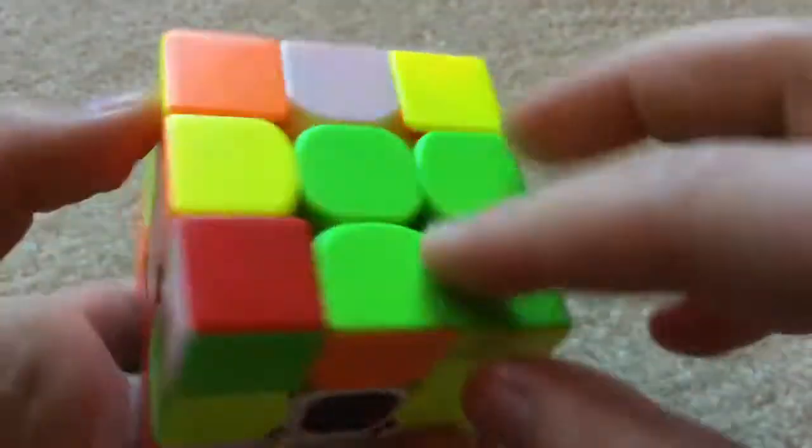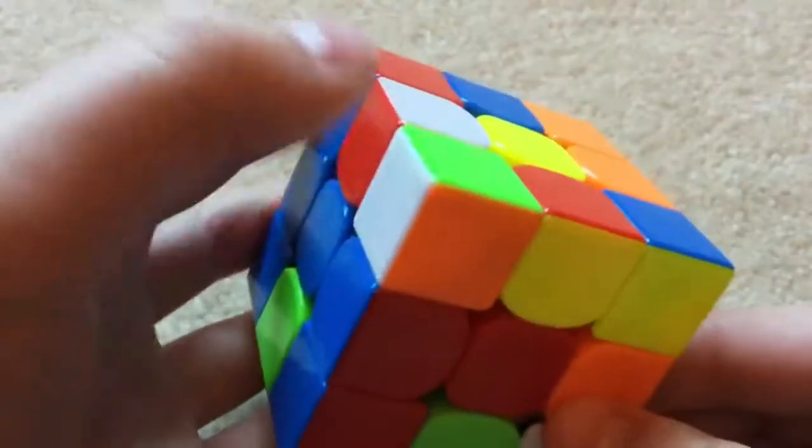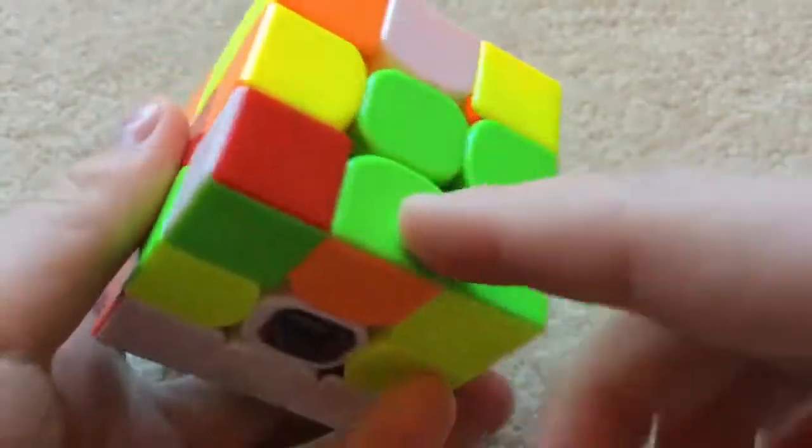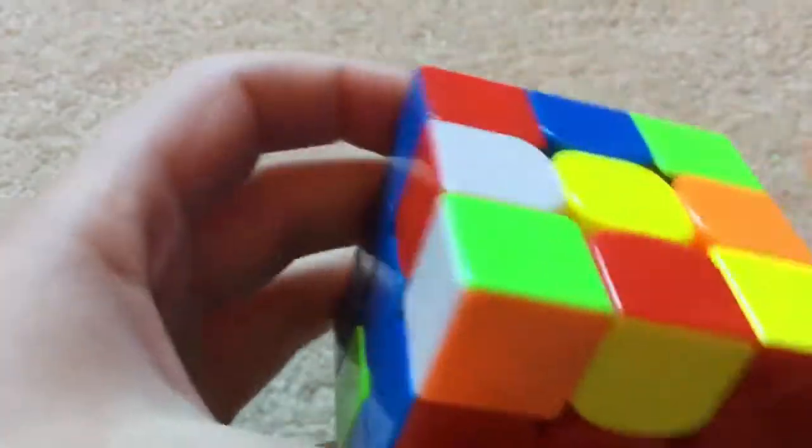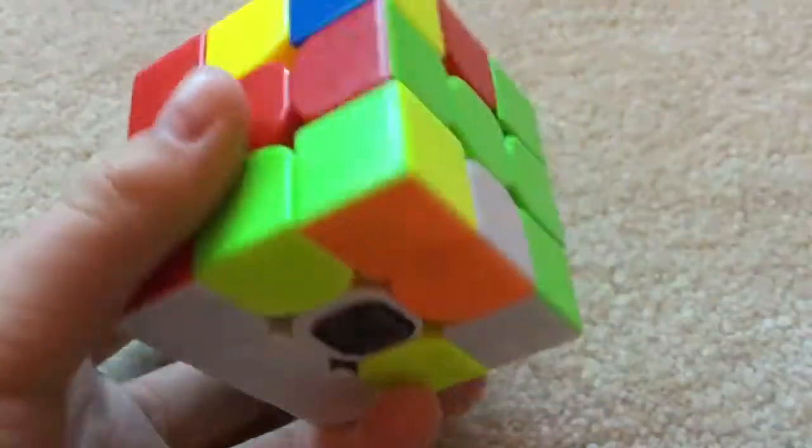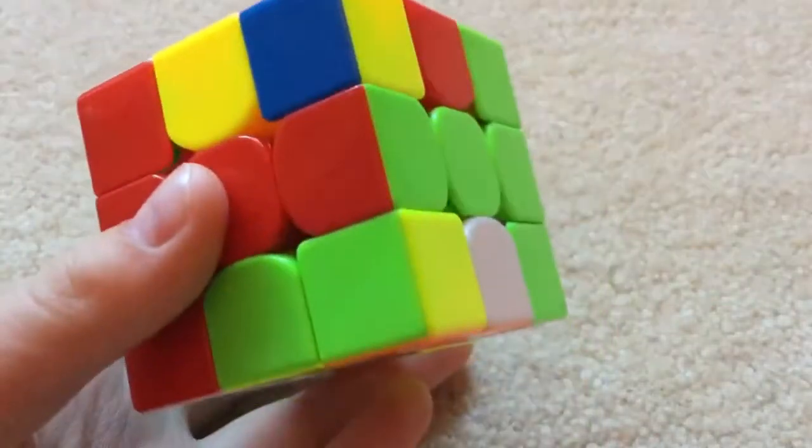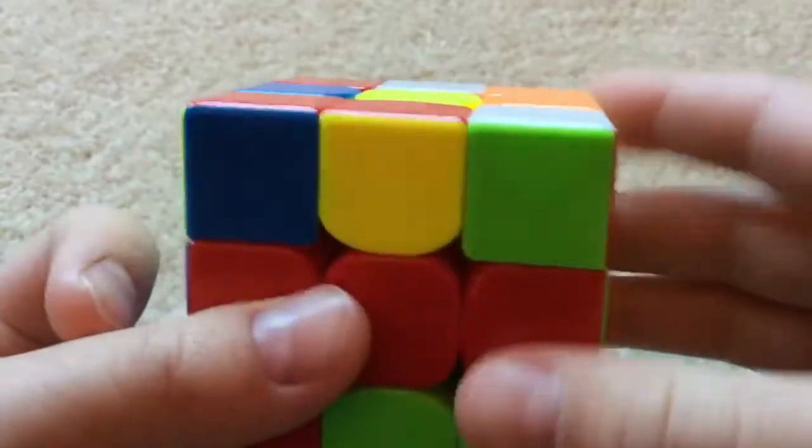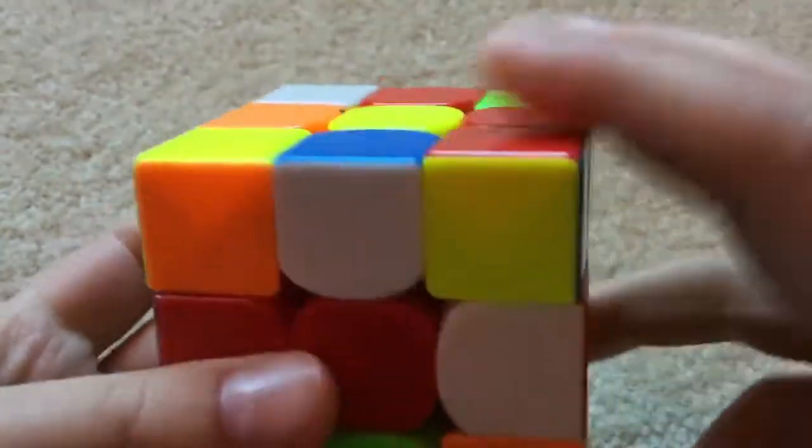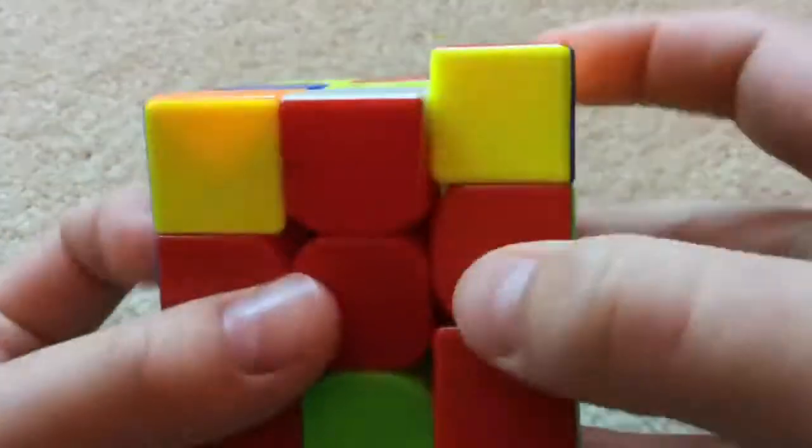So our next F2L pair is actually, this edge is on the bottom. So you see we have this edge, this corner is up here. We can just bring this edge up and finish, well not finish F2L, but do F2L. And we have our last edge that's already in. And the corner is right here. So we can bring this up and insert it.